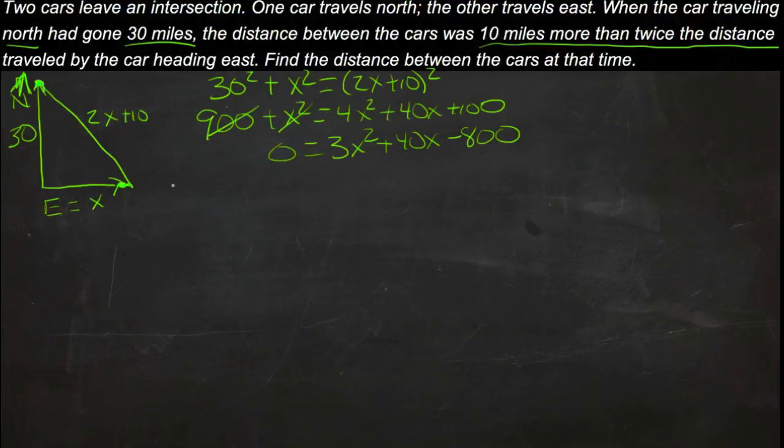We'll get a equals 3, b equals 40, and c equals negative 800.